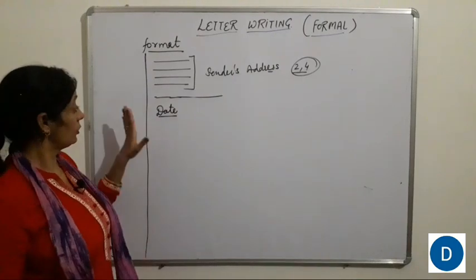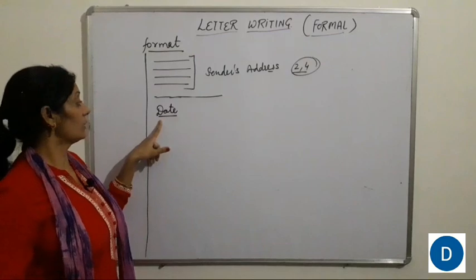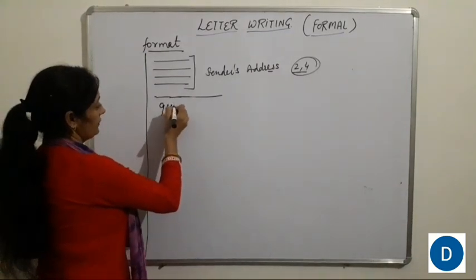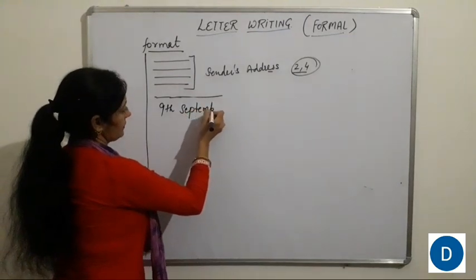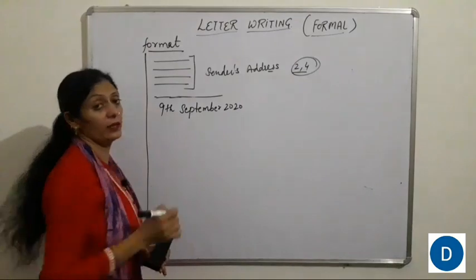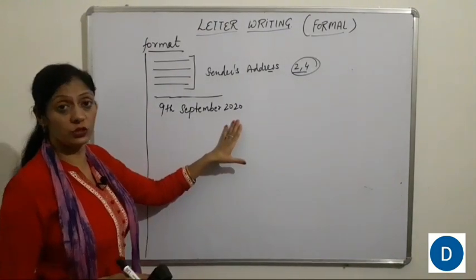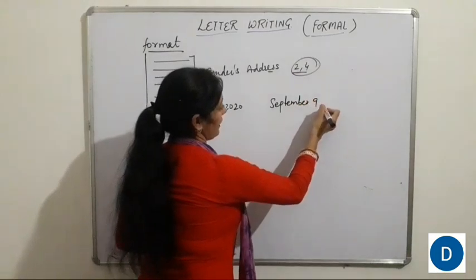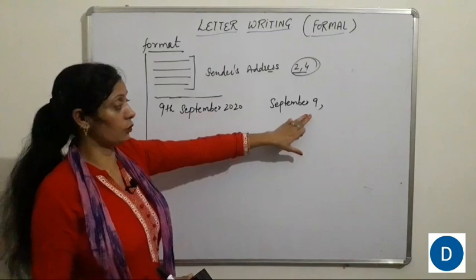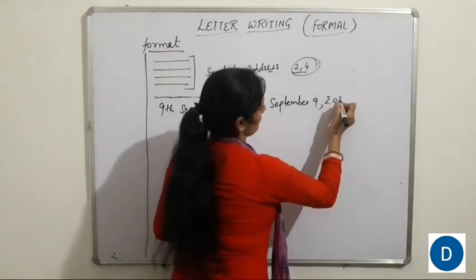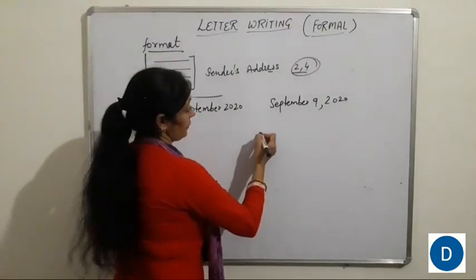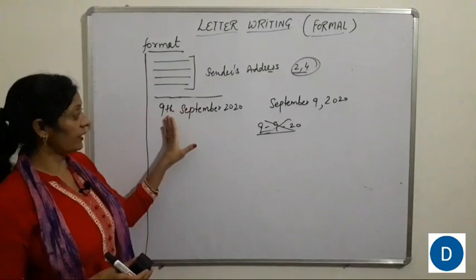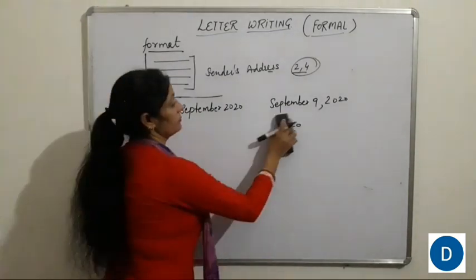After sender's address, leave a single line and mention the date. Don't write the date in the wrong way. You can write it as 9th September 2020, with no punctuation mark, or as September 9th, 2020 with a comma. Writing it as 9/9/20 is wrong — don't write it that way. You can choose either of the two correct formats.